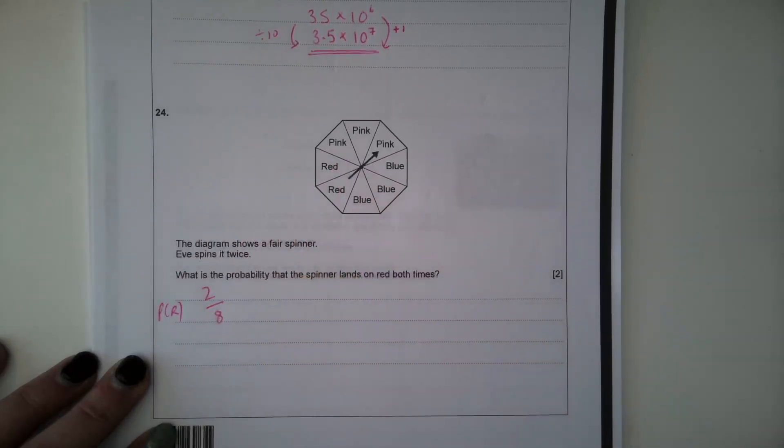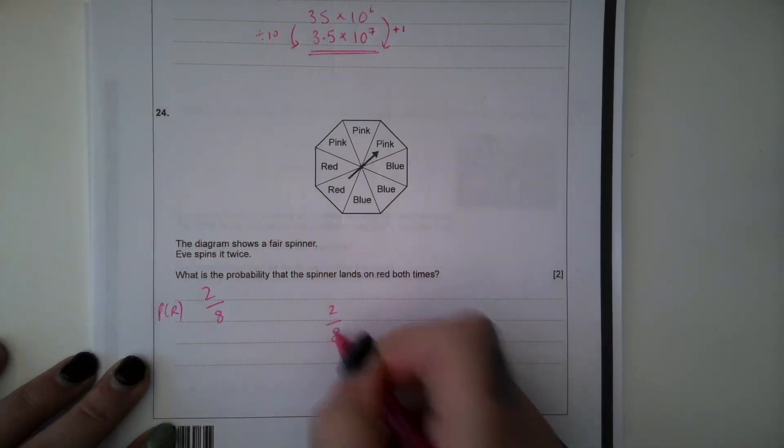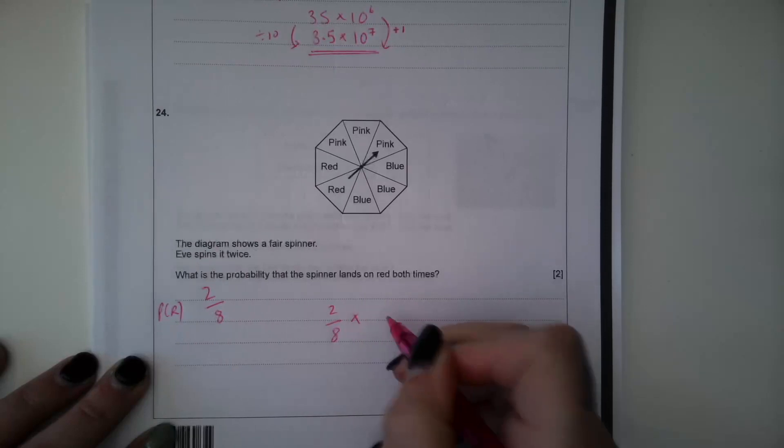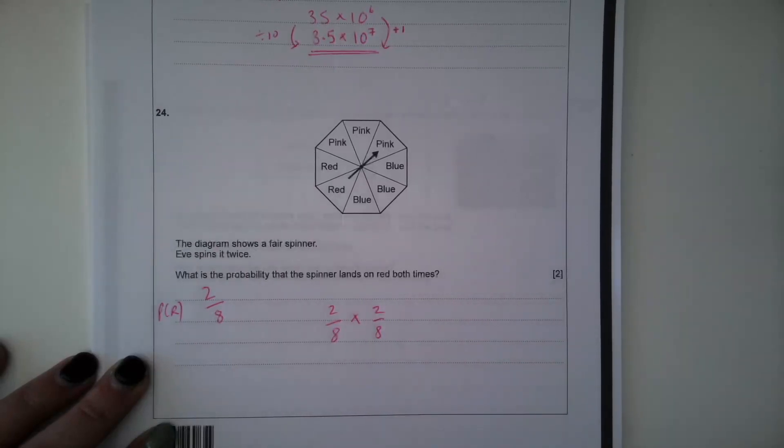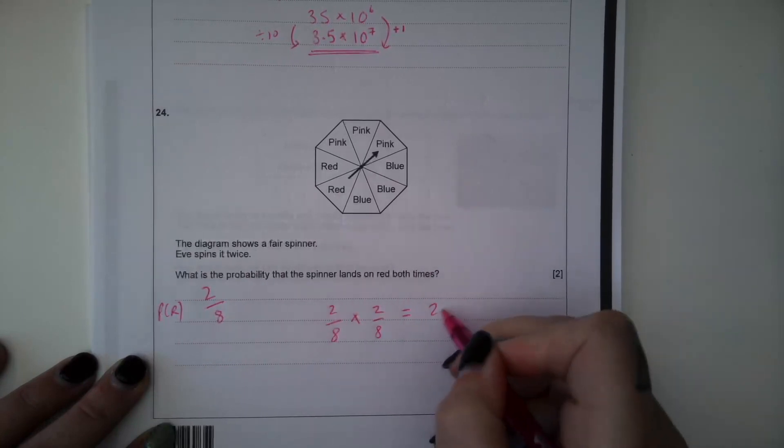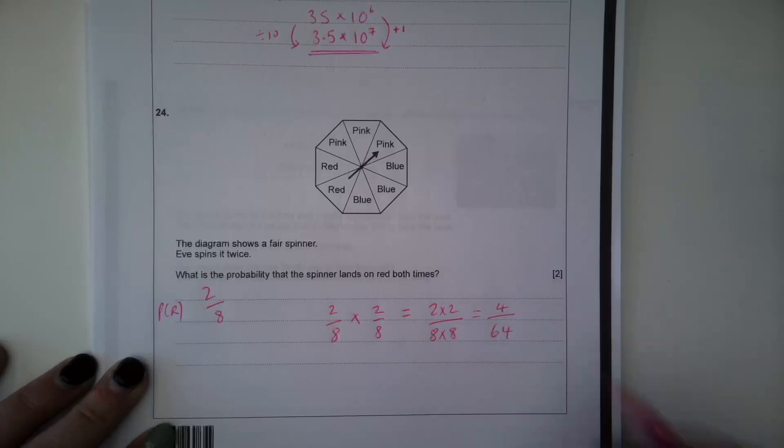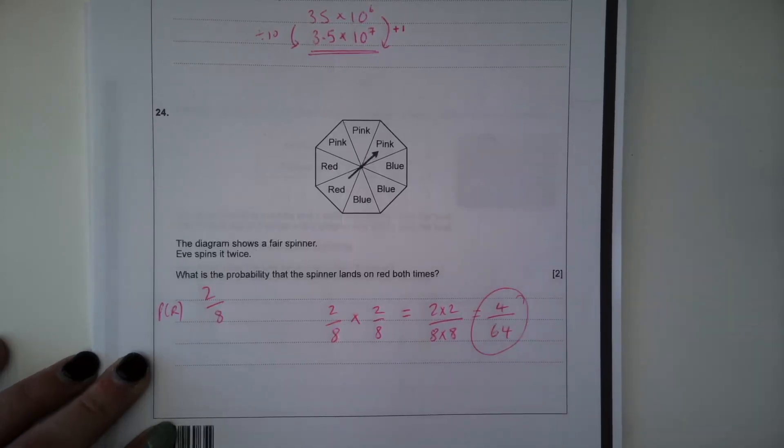So if Eve spins it twice, the first time landing on a red is 2 out of 8 possibility. And then the second time is also 2 out of 8 possibility. Multiplying fractions, we multiply the denominators. So 2 times 2, multiply the numerators. So we have 4 over 64 as our probability.